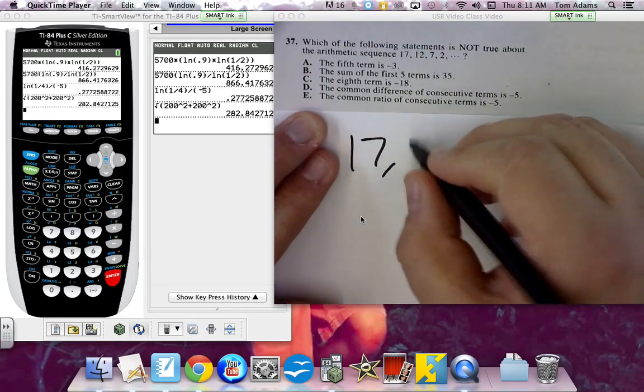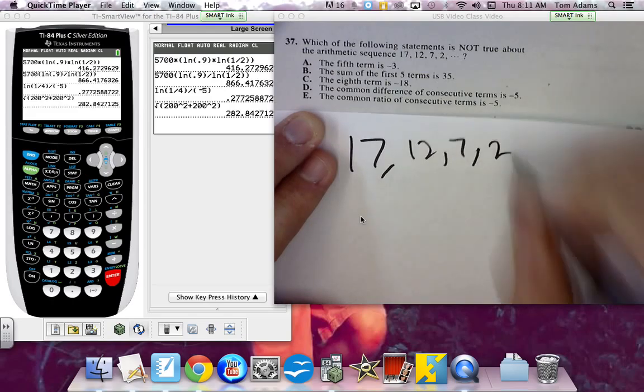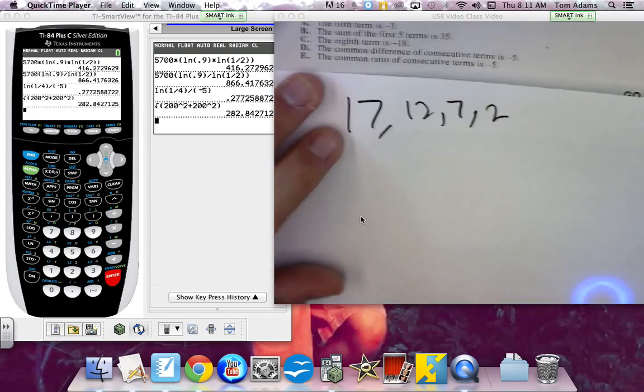we've got 17, 12, 7, 2, and it looks like they're just subtracting 5 for every term, right? So that's what they're doing.